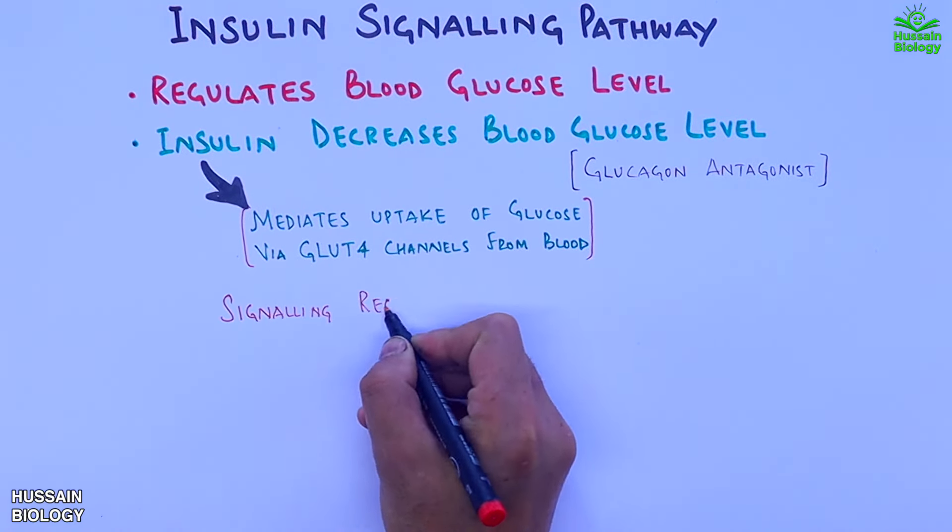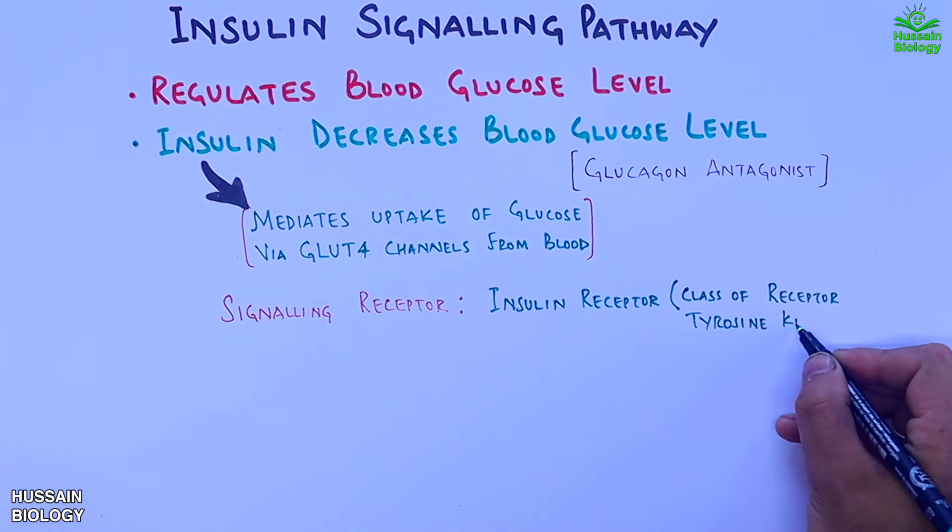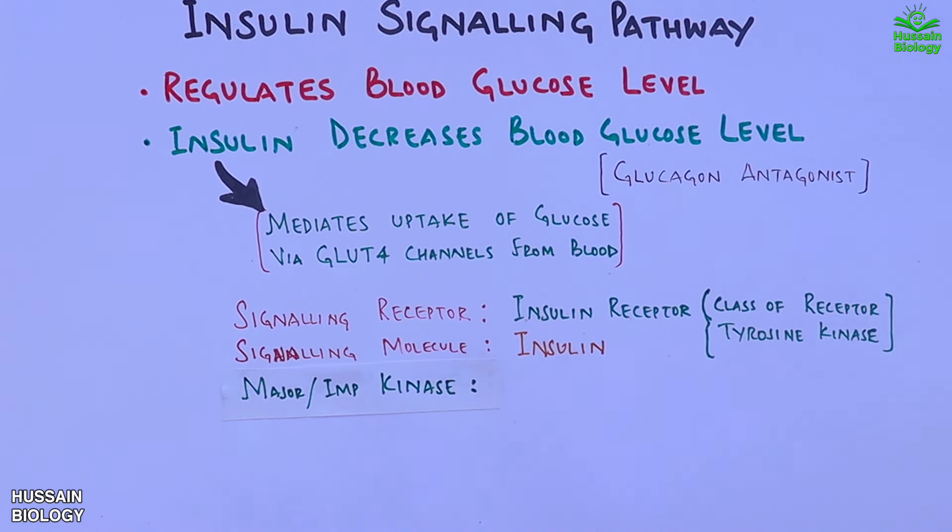The signaling molecule in this pathway is insulin, and the signaling receptor is insulin receptor, which is a class of receptor tyrosine kinase molecules. The major important kinase molecule in this pathway is protein kinase B, or AKT.